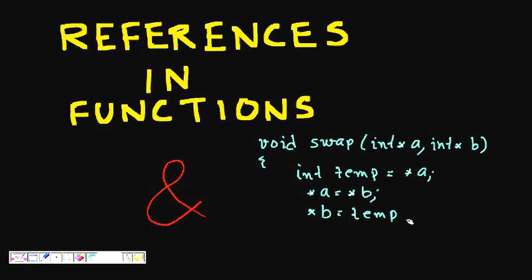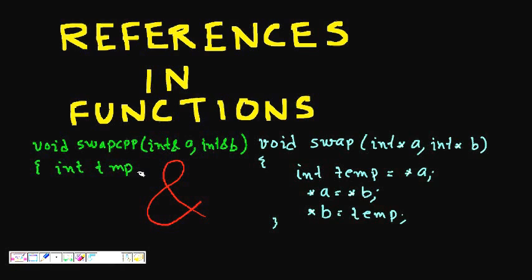A cleaner way of writing the same thing in C++ is void swap cpp, and then we write int ampersand a, int ampersand b. So we do like this and we make int temp.